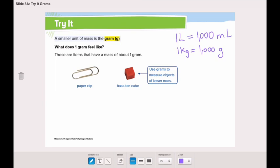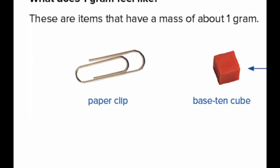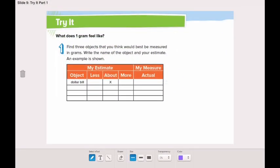These items shown here have a mass of about one gram: a paper clip and a base-10 cube. Both of them are about one gram.